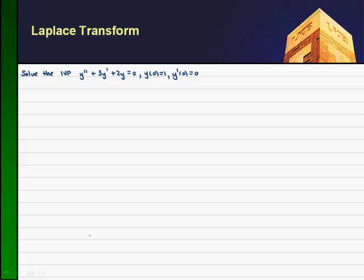Let's solve the second-order IVP. But first, let's recall from an earlier video the Laplace transform of f prime of t. We should recall that that was s times the Laplace transform of some function in time minus the function evaluated at zero. So let's use that because we don't know what the Laplace transform of y double prime is just yet. Let's see if we can find the Laplace transform of the second derivative of some function in time.